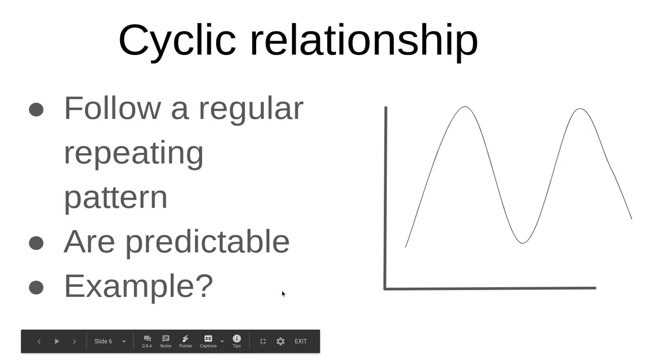Cyclic relationships follow a regular repeating pattern. One good example is the tides. Here in New York, we have the Hudson River, which has a tidal range. Every six and a quarter hours approximately, the tide changes from high to low, and then another six and a quarter hours from low to high. It happens in a regular repeating pattern, and it's predictable. It occurs because of Earth's relationship to the moon and the sun.